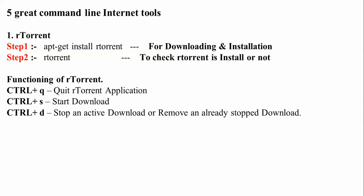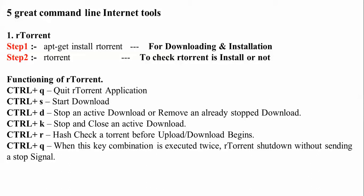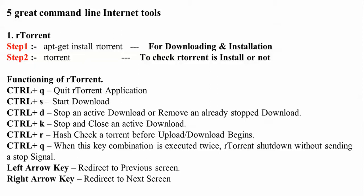For rtorrent shortcuts: Ctrl+Q to quit the application, Ctrl+S to start a download, Ctrl+D to stop downloading or remove an already downloaded item, and Ctrl+K to stop and close your active download. Ctrl+R is to check your torrent before upload and download begins. You can use multiple key combinations, and the left arrow key redirects to your previous screen. The right arrow key moves to the next screen.